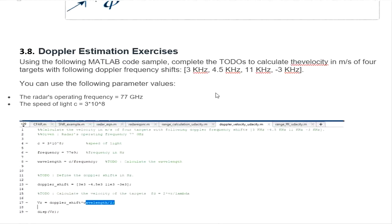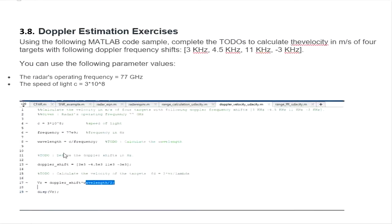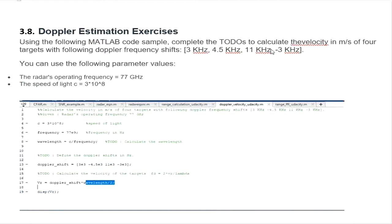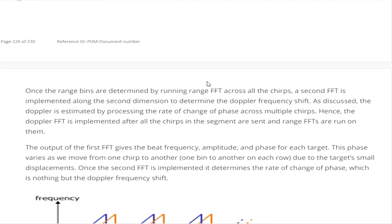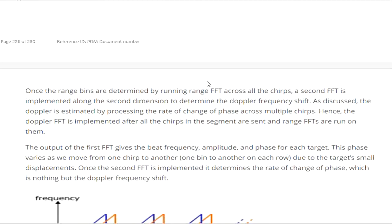If all targets were 200 meters ahead of the radar vehicle and the vehicle velocity equals 5 m/s, then in the next 5 seconds, target C would be closest because it has the highest Doppler frequency and therefore the highest velocity. Once range is determined by running the range FFT across all chirps, a second Fourier transform is implemented along the second dimension to determine the Doppler frequency shift.